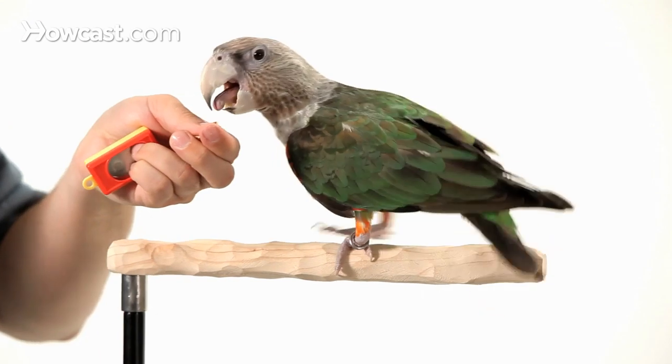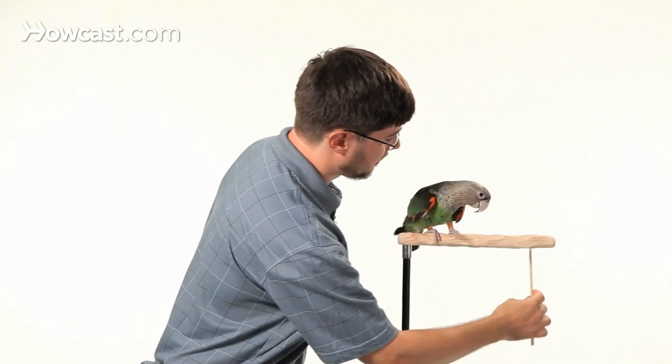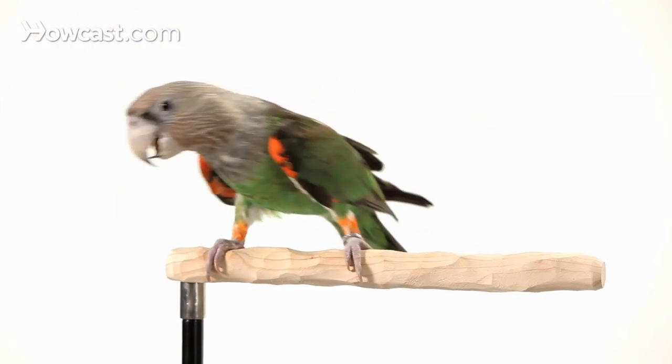Truman, target. Good boy. So we're going to start targeting him in a 180 degree motion. And by getting him to turn the other way to touch the stick, and then we can use the treat to get him to come back around for the rest of it.